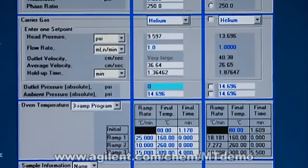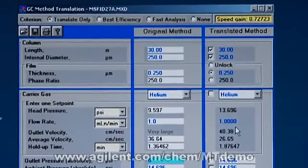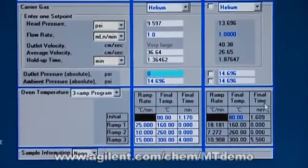If we look at his method over here, translate only, he's got the same column, helium carrier gas, same flow rate, but his outlet pressure is higher. Therefore, his temperature program is different.